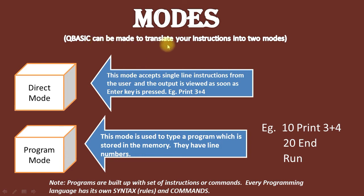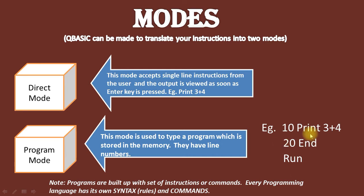The next slide is about modes. QBasic can translate your instructions in two modes. The first is direct mode, which accepts single line instructions from the user and the output is viewed as soon as the Enter key is pressed. The second is program mode, which is used to type a program that is stored in memory and uses line numbers.